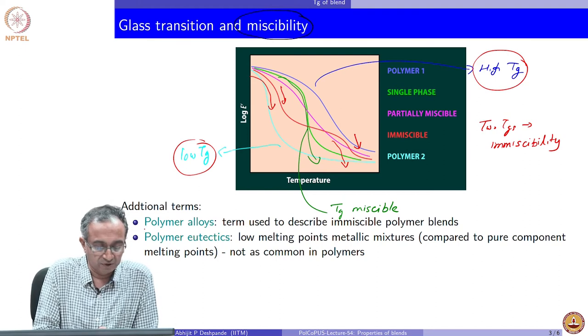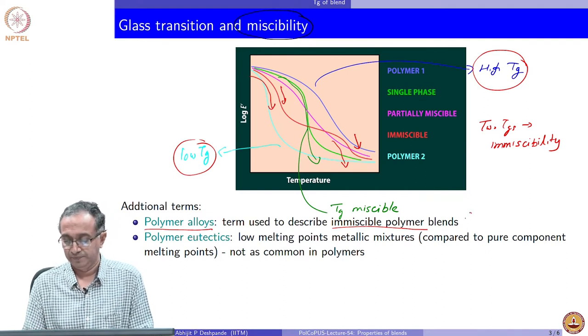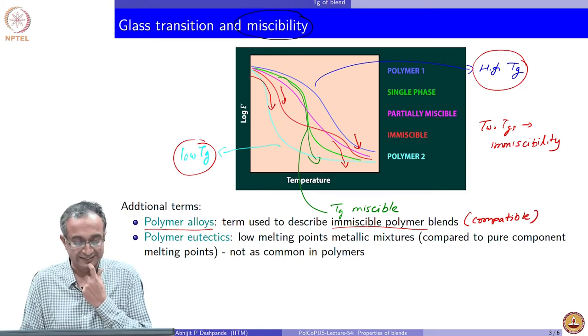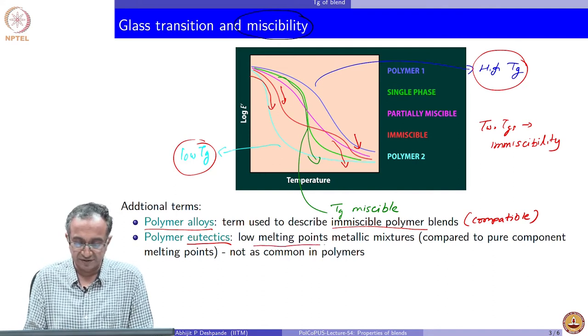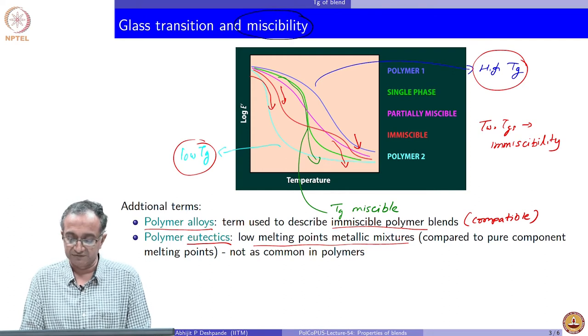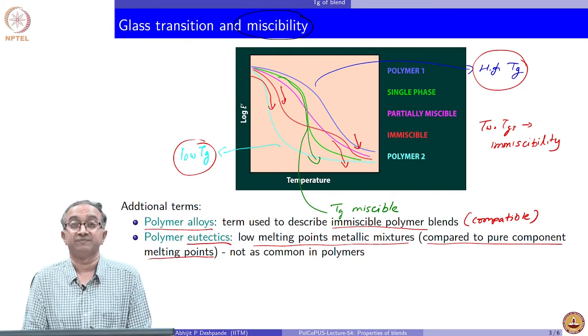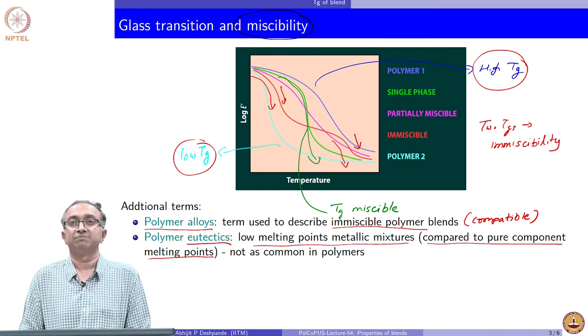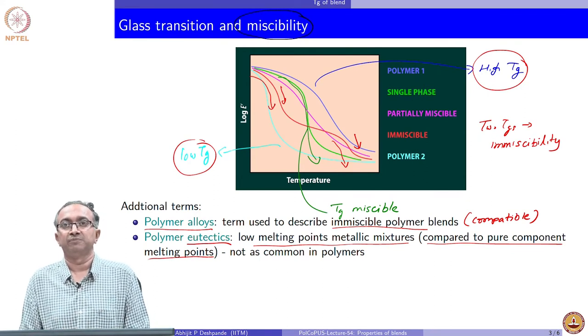We have already said that alloys are generally for immiscible polymer blends, but which are compatibilized. There is some compatible interaction at the interface of these immiscible polymer blends. There is also a term eutectics used, which basically derives from the low melting points metallic mixtures, because the melting point is low compared to the pure component melting points itself. Generally, though, this is not observed, there are very few polymeric systems which show this eutectic behavior.